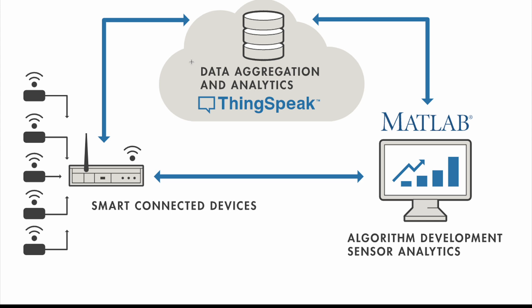In the ThinkSpeak cloud, it's basically a database where data aggregation and some analytics can take place. You can also talk back to your device as soon as a certain value is reached. This may be useful, though you could also just trigger an action directly on your device. On the other hand, you can trigger an action via an API directly towards another device — a different device that was not the one collecting the data in the first place.